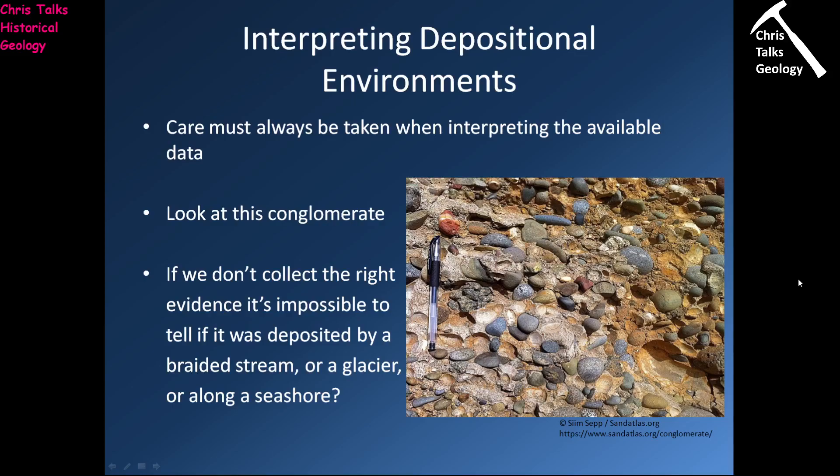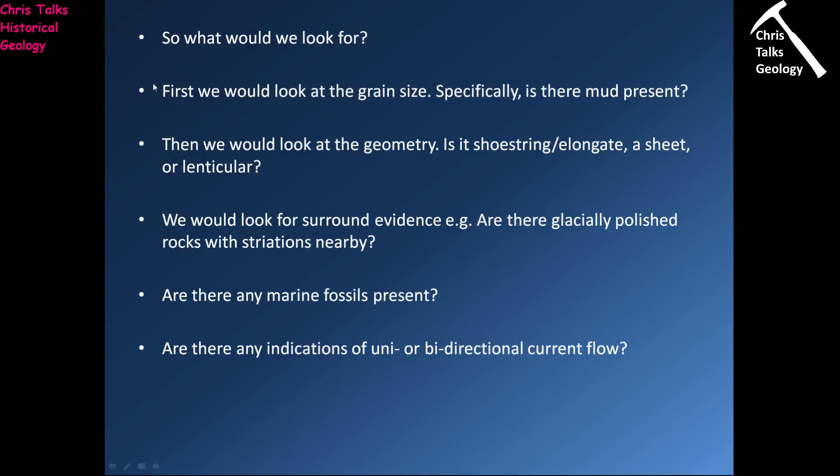Let's look at this conglomerate here. The problem is, if we don't collect the right information, then it's impossible to tell whether this conglomerate represents a braided river sediment sample, a glacier, or maybe a beach environment. So if we don't get the right information, we can't really be sure. So what do we look for?